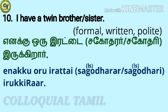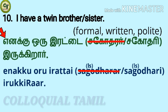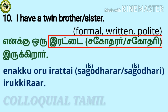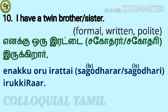To say 'I have a twin brother' — 'Ena kku Irenda Sakbowther Irikkiraar.' To say 'I have a twin sister' — 'Ena kku Irenda Sakbowtheri Irikkiraar.' We will learn 'Irenda Sakbowthera' and 'Irenda Sakbowtheri' in the Learn Tamil Words Part 3 video. This is in formal, written, and polite form. For the colloquial form: 'Ena kku Irenda Sakbowthera Irikkaang' and 'Ena kku Irenda Sakbowtheri Irikkaang.'